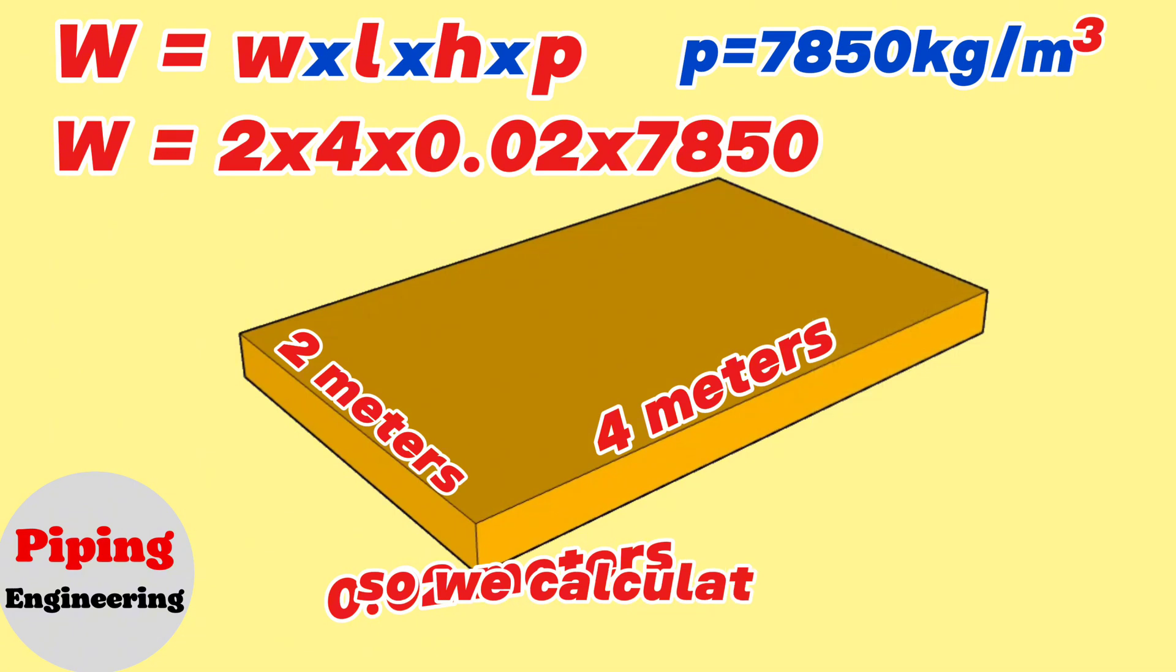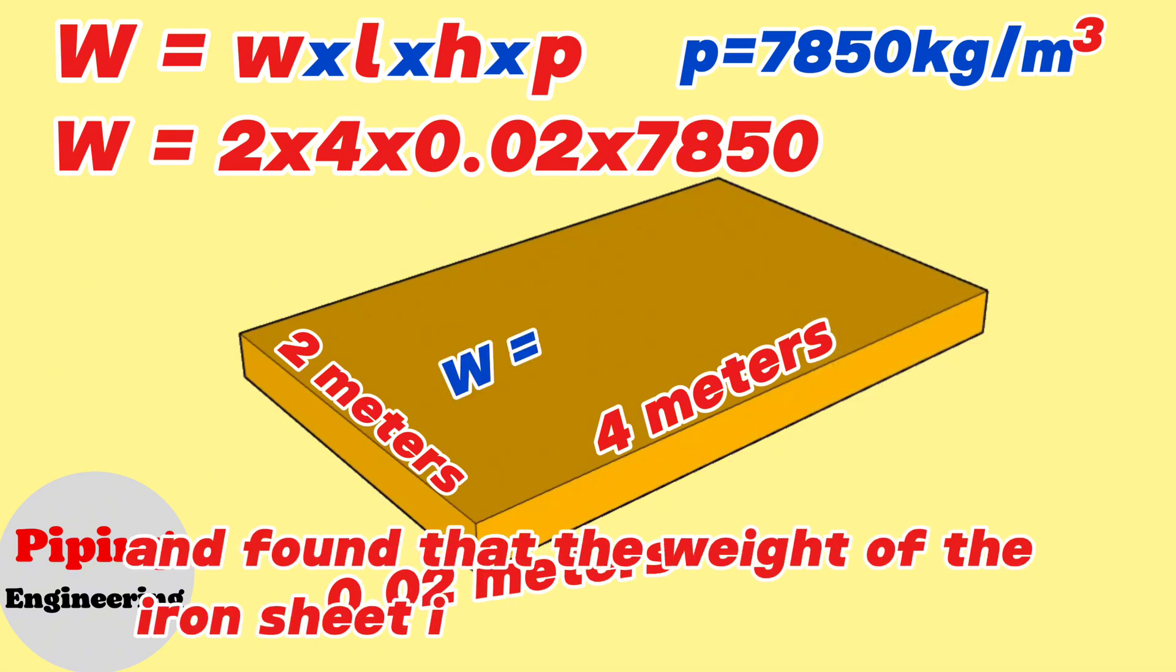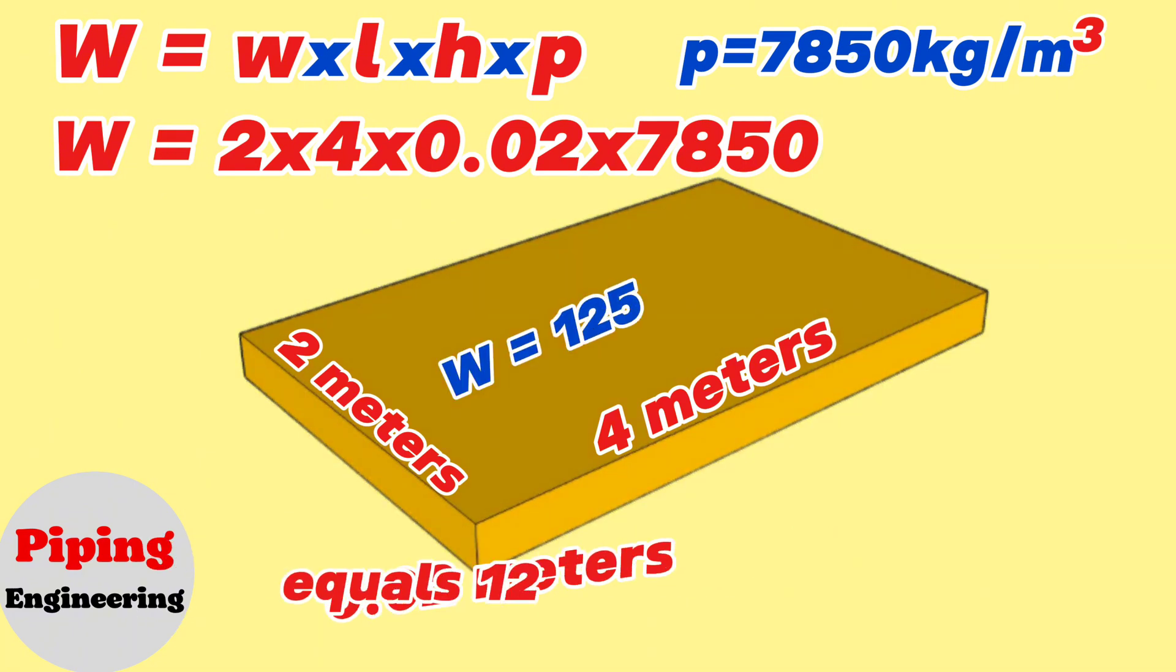So we calculated and found that the weight of the iron sheet in our example will be equals 1256 kg.